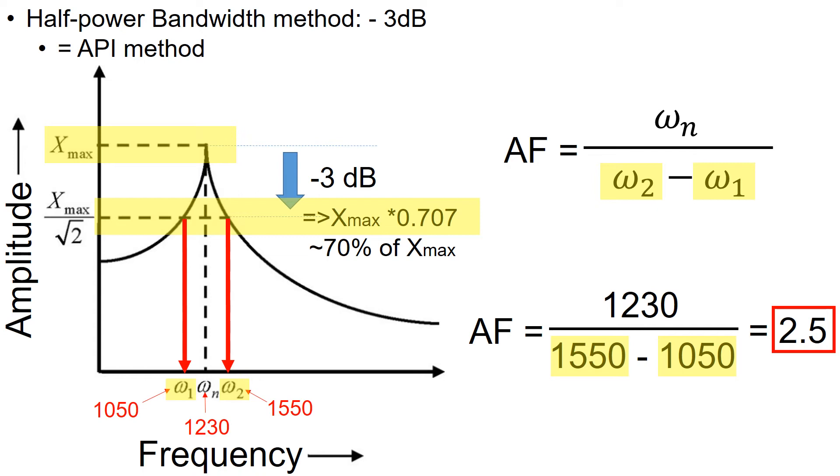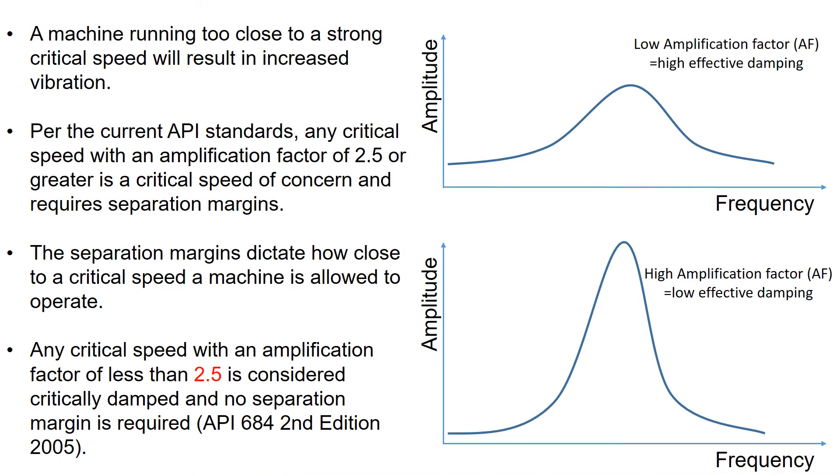A machine running too close to a strong critical speed will result in increased vibration. So per the API standard, if you have the amplification factor larger than 2.5, it is recommended to have a separation margin to operate the machine. But any critical speed with an amplification factor of less than 2.5 is considered critically damped and no separation margin is required.